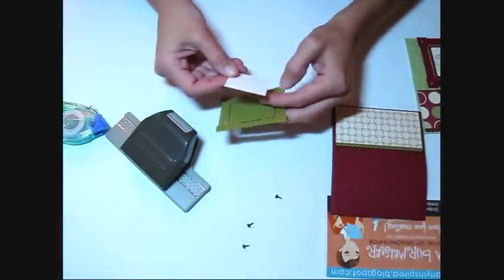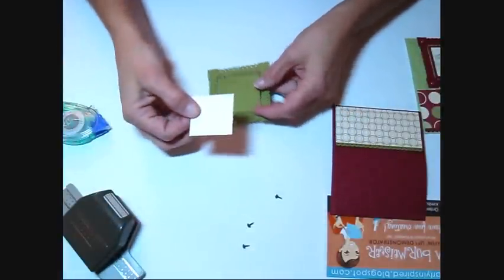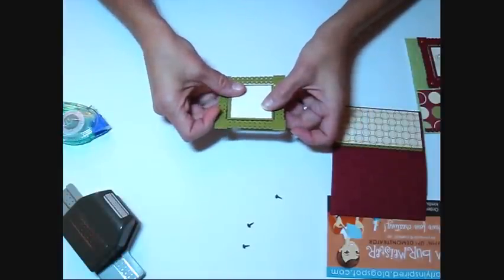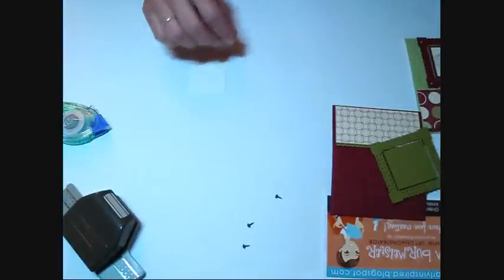Then this piece that goes inside of your frame is 1 and 3/4 by 1 and 3/4. And it's just going to sit right in the middle there. So we're going to decorate this.